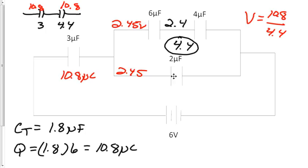Now I want to get my charge on this 2 microfarad capacitor. So then I just say Q equals CV, so 2, and then multiply that by 2.45, and that's 4.9 microcoulombs. So now I know there's 4.9 microcoulombs on the 2 microfarad capacitor, and there's 2.45 volts.